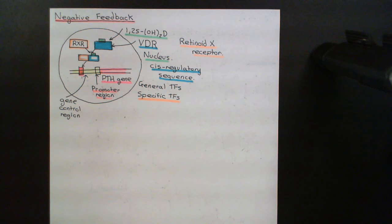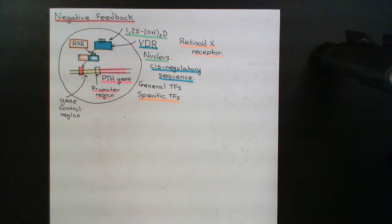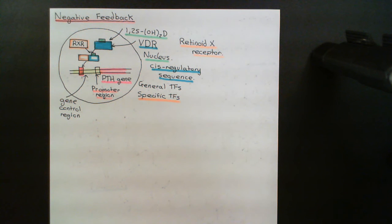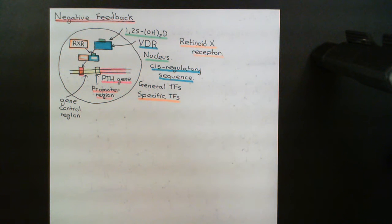Parathyroid hormone has effects on the kidneys to raise free calcium concentration in the blood. Both parathyroid hormone and 1,25-dihydroxyvitamin D are going to work together to activate bone resorption, releasing calcium from bone into the blood to increase free calcium concentration. In addition, 1,25-dihydroxyvitamin D has effects on the gastrointestinal system to increase calcium absorption and also increase phosphate absorption.